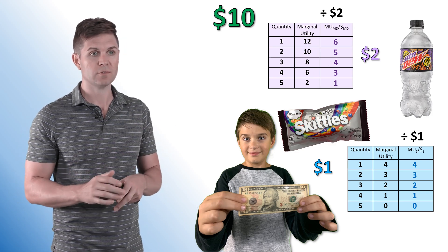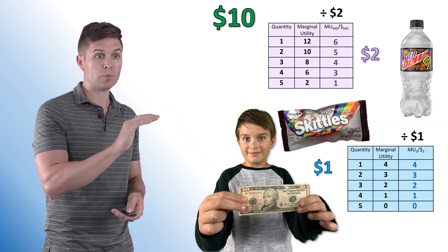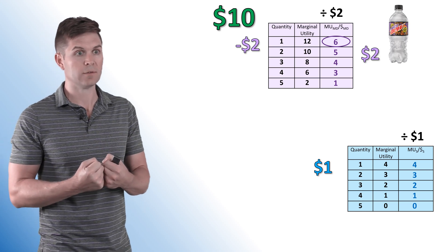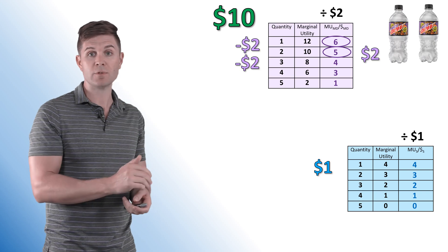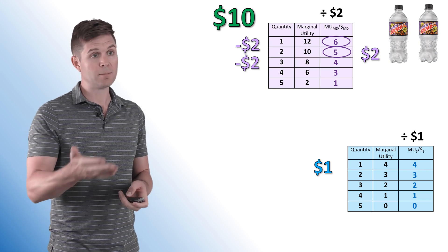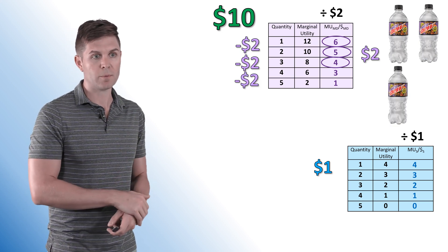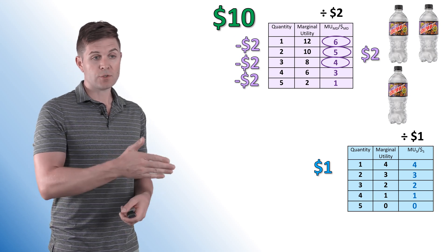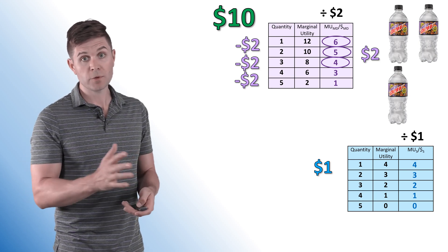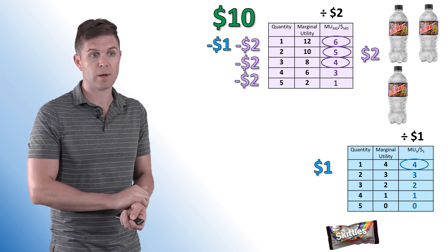Now we know his per dollar marginal utility for each item and can start making decisions. The highest per dollar satisfaction is the first Mountain Dew at 6 per dollar, so he grabs one. The second purchase is also a Mountain Dew at 5 per dollar. For the third item, Mountain Dew gives 4 per dollar and Skittles also give 4 per dollar — so we'll grab another Mountain Dew. Next, he should grab a bag of Skittles because it's worth 4 per dollar, more than the next Mountain Dew at 3 per dollar.